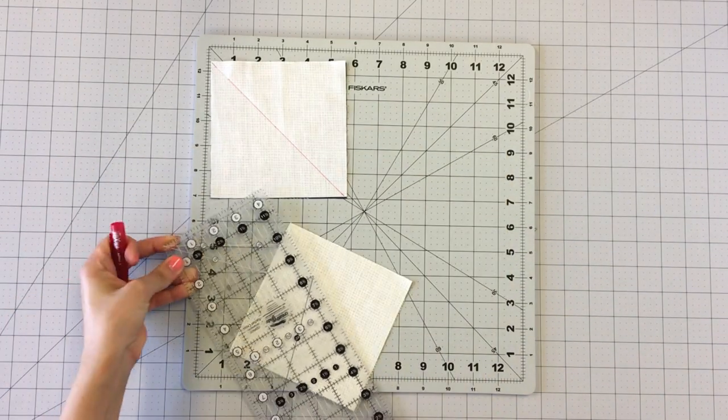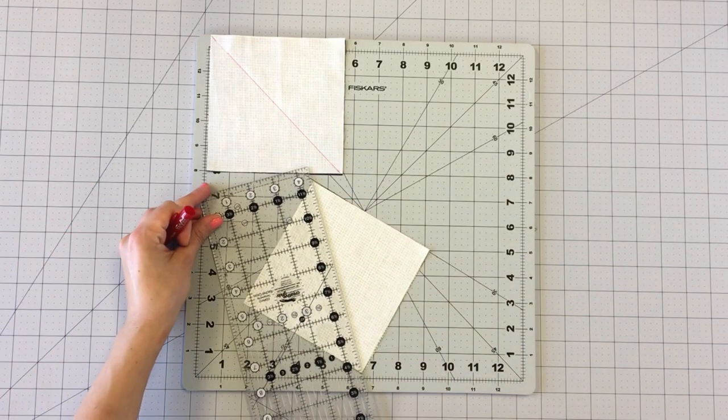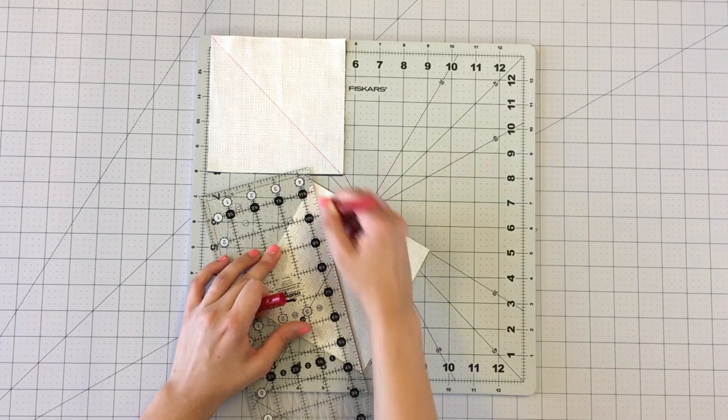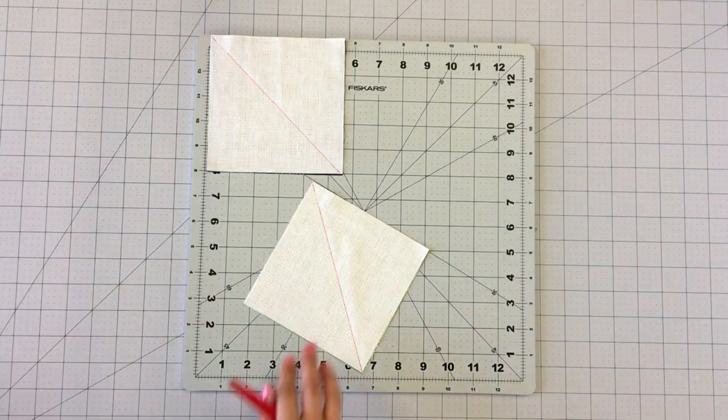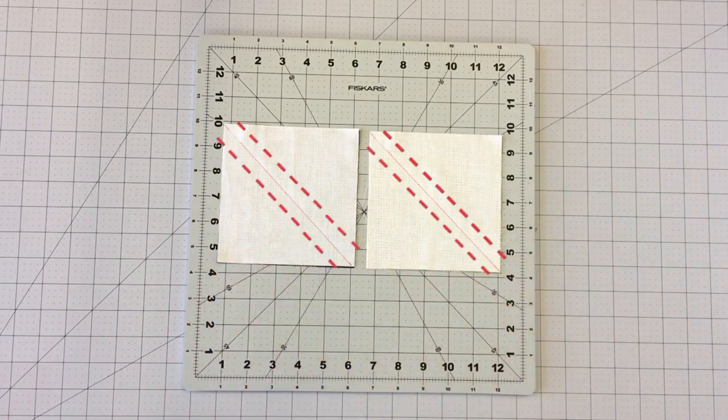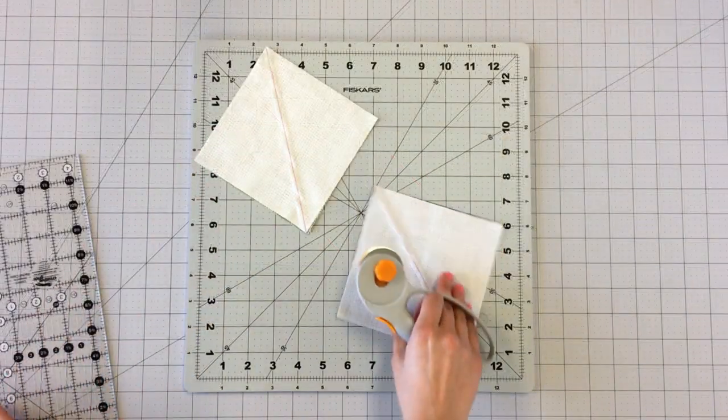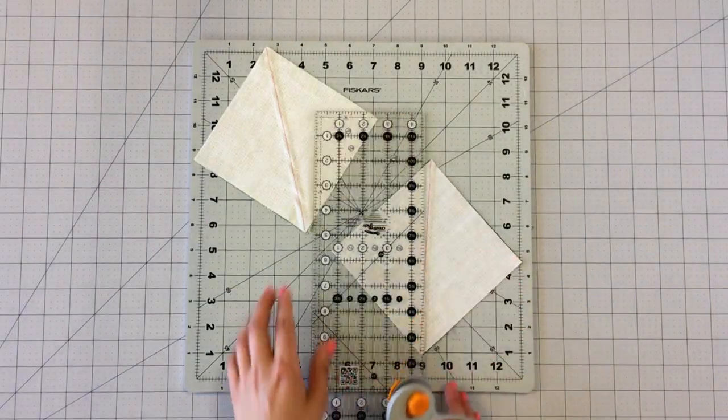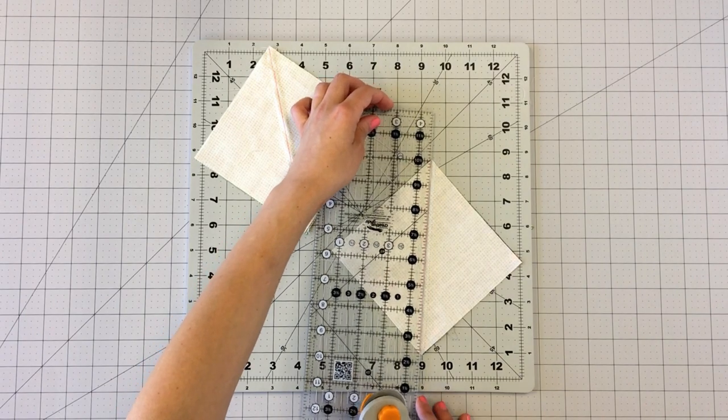Sew at one fourth inch on each side of the line. Cut on the line you drew to reveal two BD and two CD half square triangles.